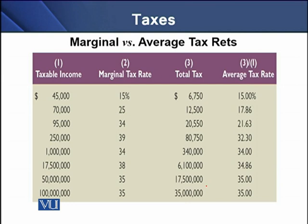What is the marginal tax rate? If a person earns any amount above $45,000, the tax rate would go to 25%. This means that if a person earns $45,000 and $1 more, then up to $45,000 the tax rate is 15%, and on that additional $1 the tax rate would be 25%.